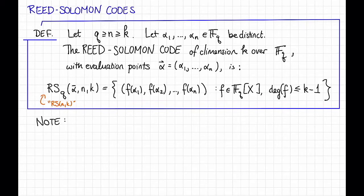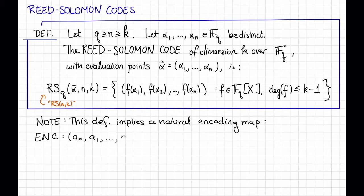Just a note, this definition implies a natural encoding map. That is, the map is the one that takes a message A₀, A₁, dot dot dot, up to A_{K-1},